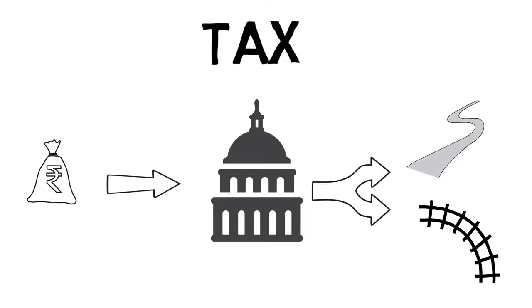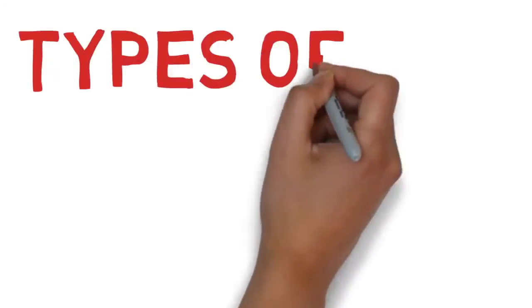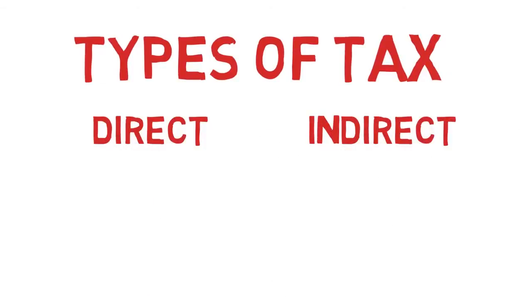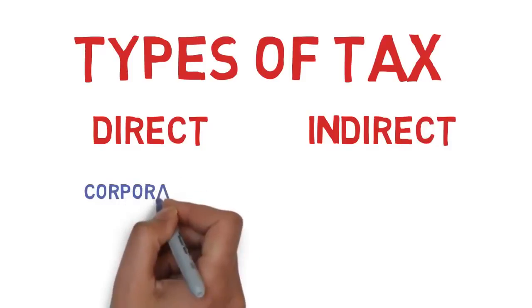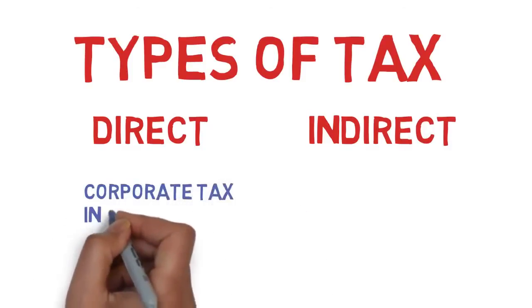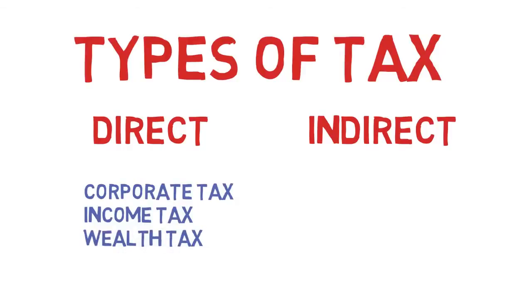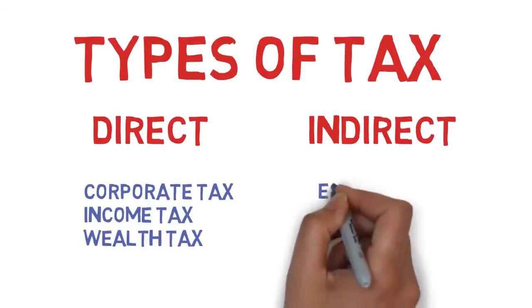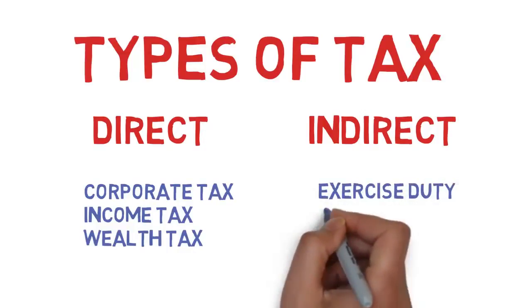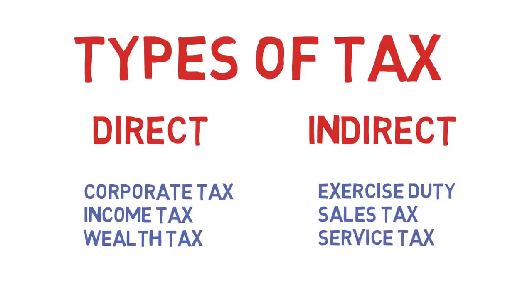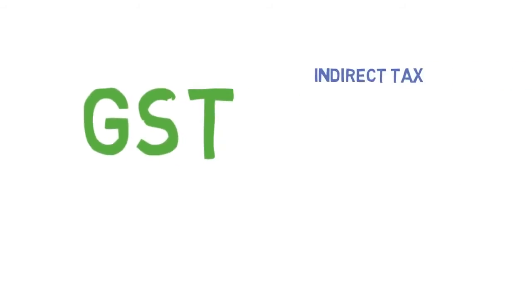Taxes are used to pay off national debts. There are two types of taxes: direct tax and indirect tax. Direct tax is one whose liability cannot be shifted to someone else — like corporate tax, income tax, wealth tax, etc. Indirect tax is one whose liability can be shifted to someone else — it includes central excise tax, sales tax, service tax, etc.